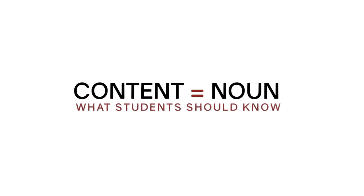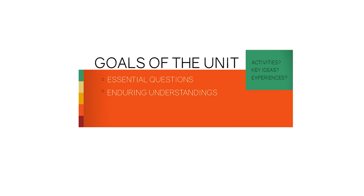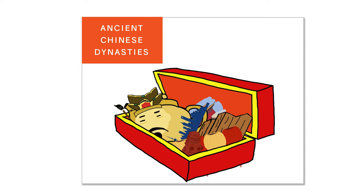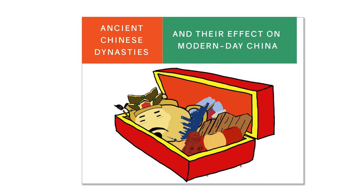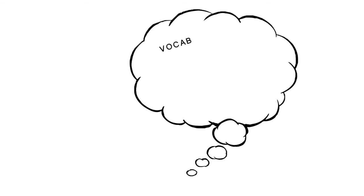What students should know — if students should know these things, I should probably be able to put it in kid-friendly language, right? Absolutely. I think I'm struggling to pinpoint my content because my topic of ancient Chinese dynasties is vague. What if I said 'ancient Chinese dynasties and their effect on modern-day China'? That sounds great, and from there we can get more and more specific — think of vocabulary, key ideas, and major concepts you want students to know.